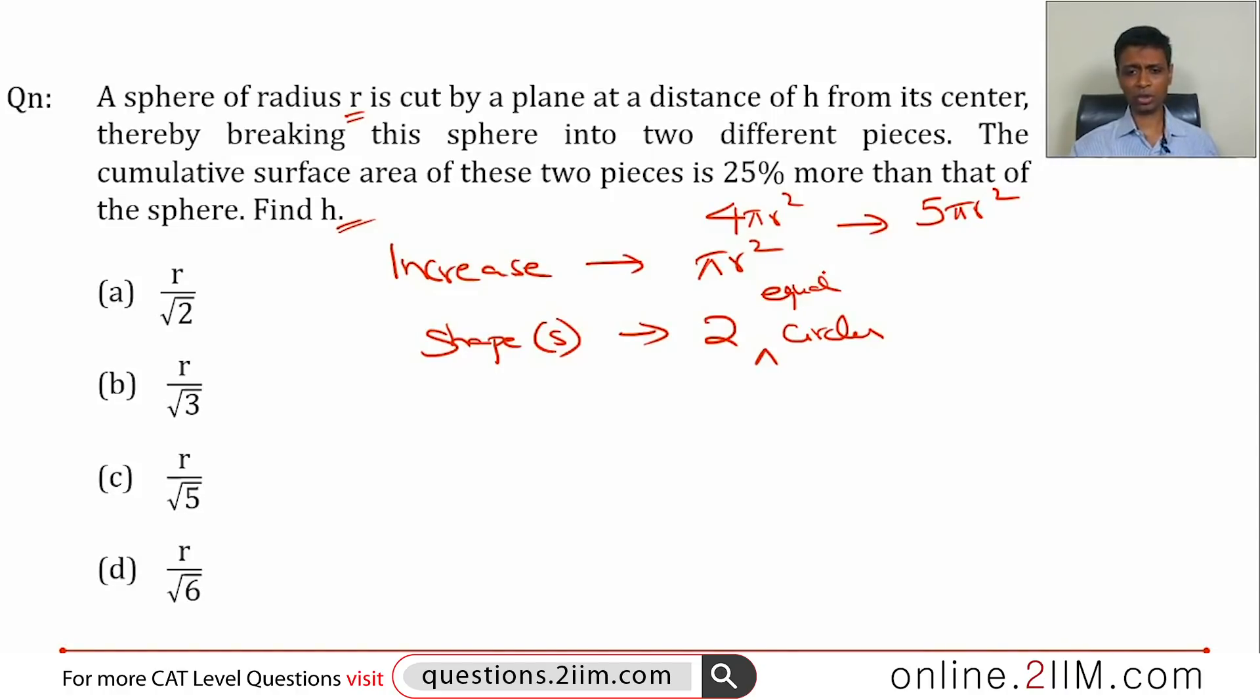So think about this: what is the area of one circle? That will be πr² by 2. The total increase in area is πr², this comes from two equal circles, so each circle will have an area of πr² by 2. I've done all of these inferences, I'm going to put them together in a diagram and then think about that.